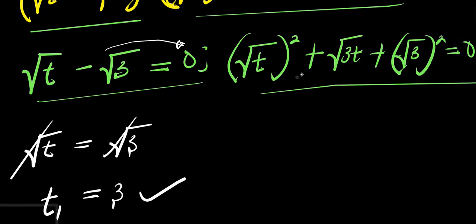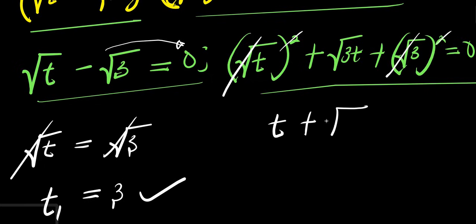Now to solve the other factor, after the square roots cancel we have t plus square root of three t plus three equals zero.